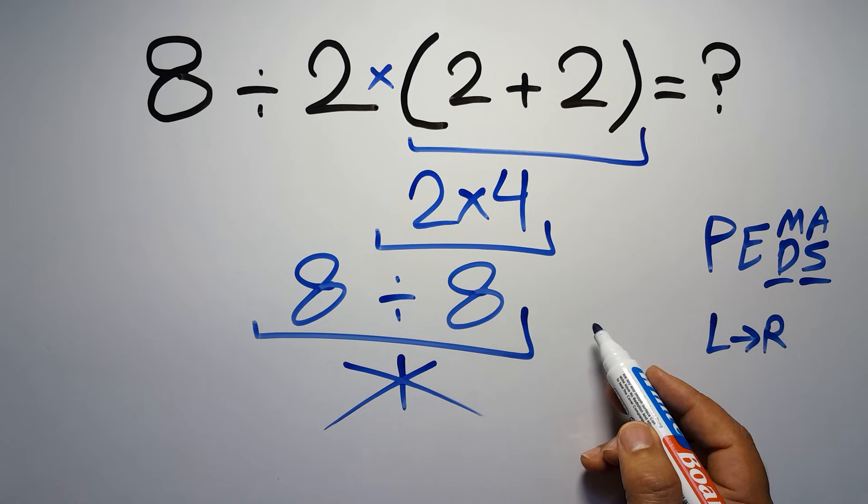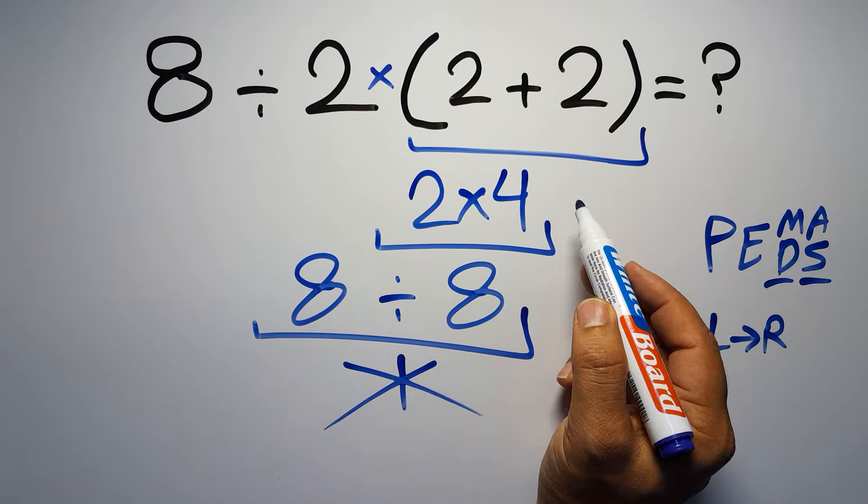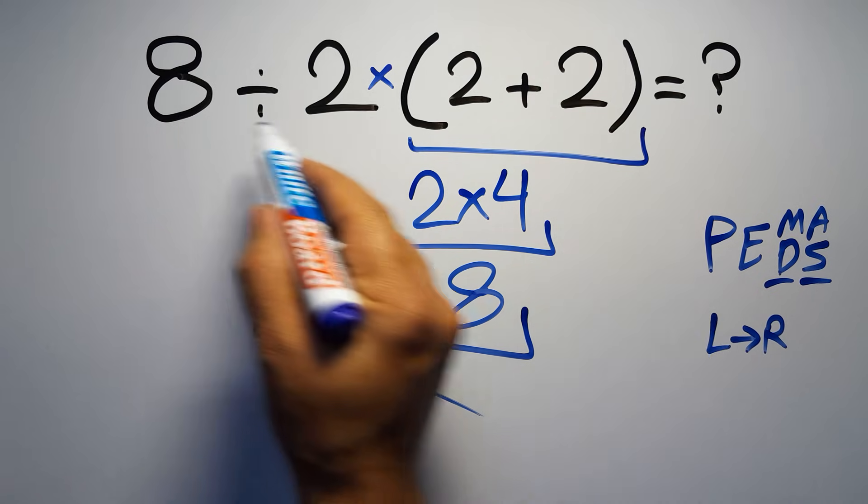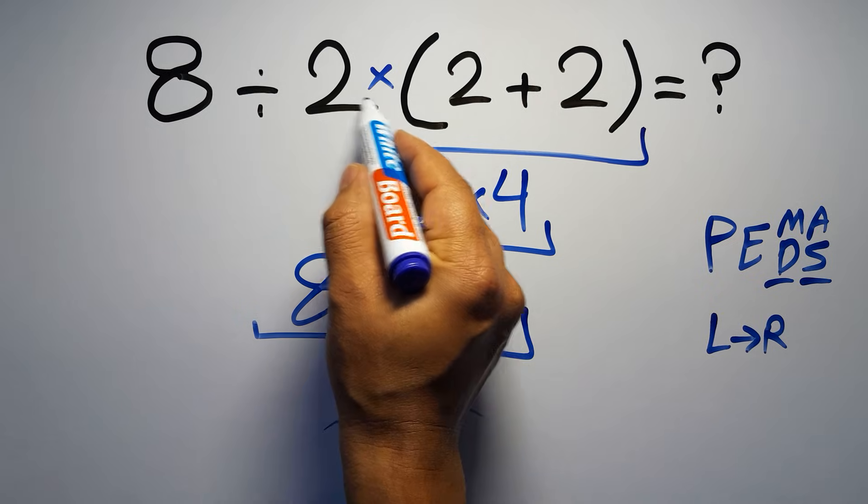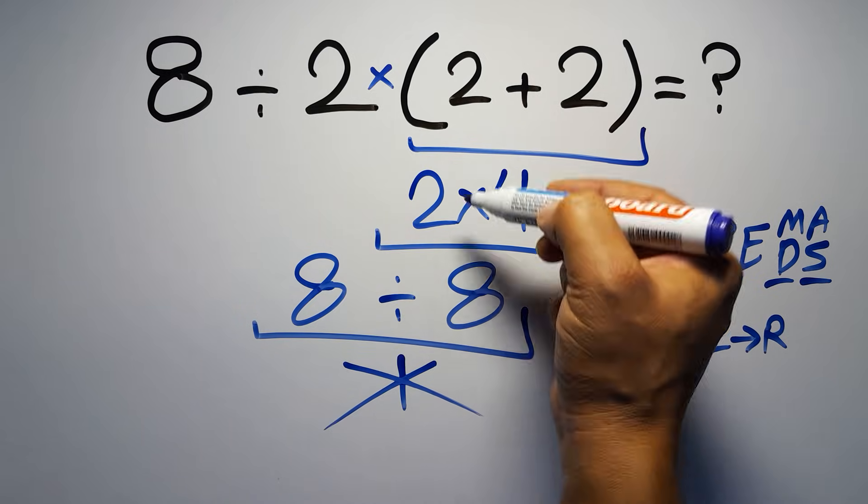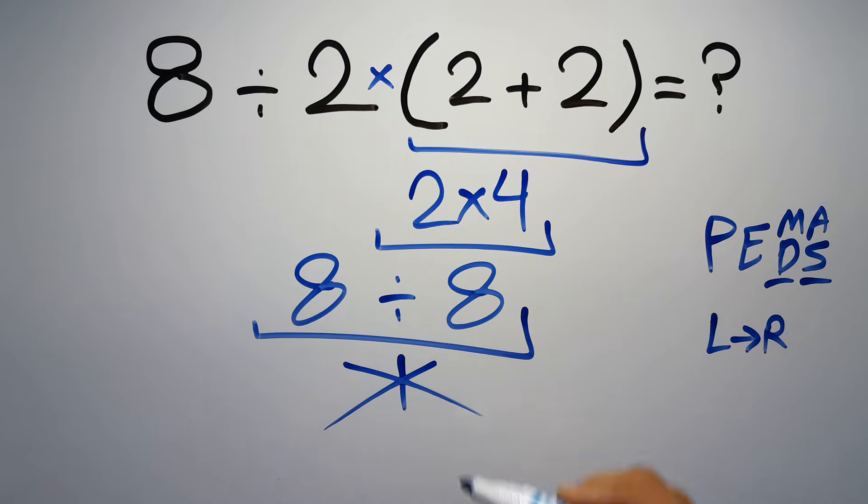So according to PEMDAS, first we have to do this parentheses, then this division, and finally this multiplication. If we do this multiplication before this division, it is wrong.